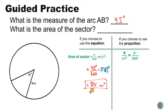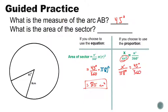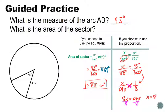Let's do the same thing using the proportion. Label the unknown sector area as x. We know pi r squared is the area of the circle. So x over 64 pi equals 45 over 360. Simplifying: 64 pi in the denominator, and 45 over 360 is one eighth. Cross-multiplying: 2x equals 64 pi, so x equals 8 pi square centimeters. Same answer either way — use whichever method you prefer.